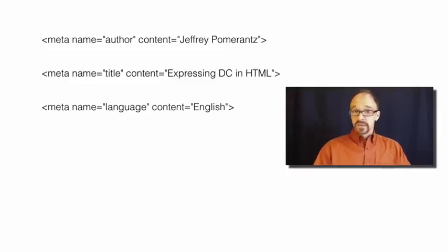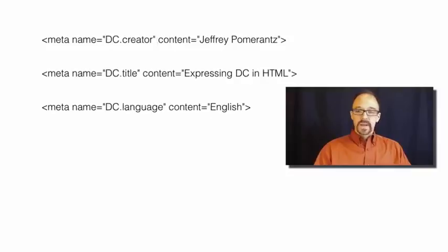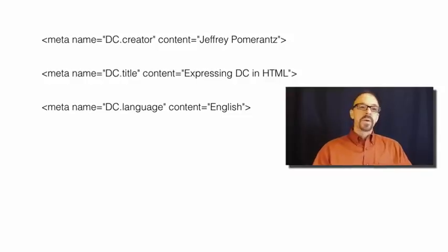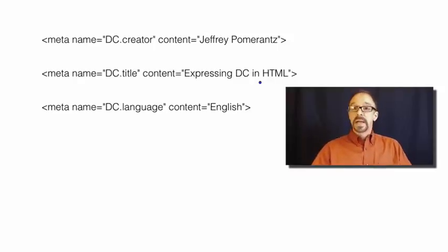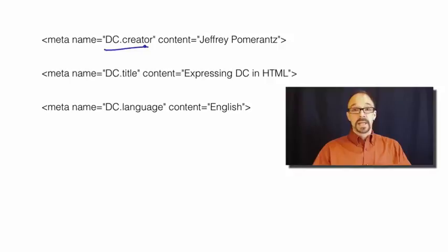But let's go back to only the actually serious ones. Author, title, language, et cetera turn into this format when you are trying to represent it in Dublin Core. Author is not the name of the element in Dublin Core — it's creator — and so it's represented like this.